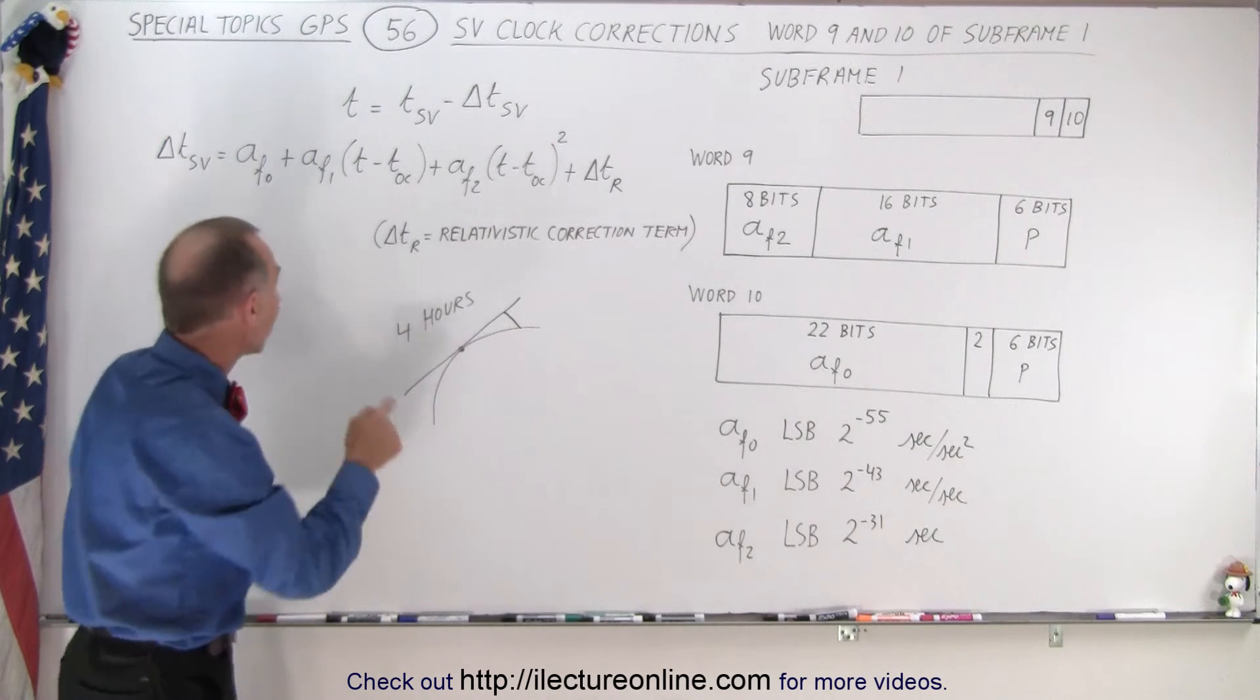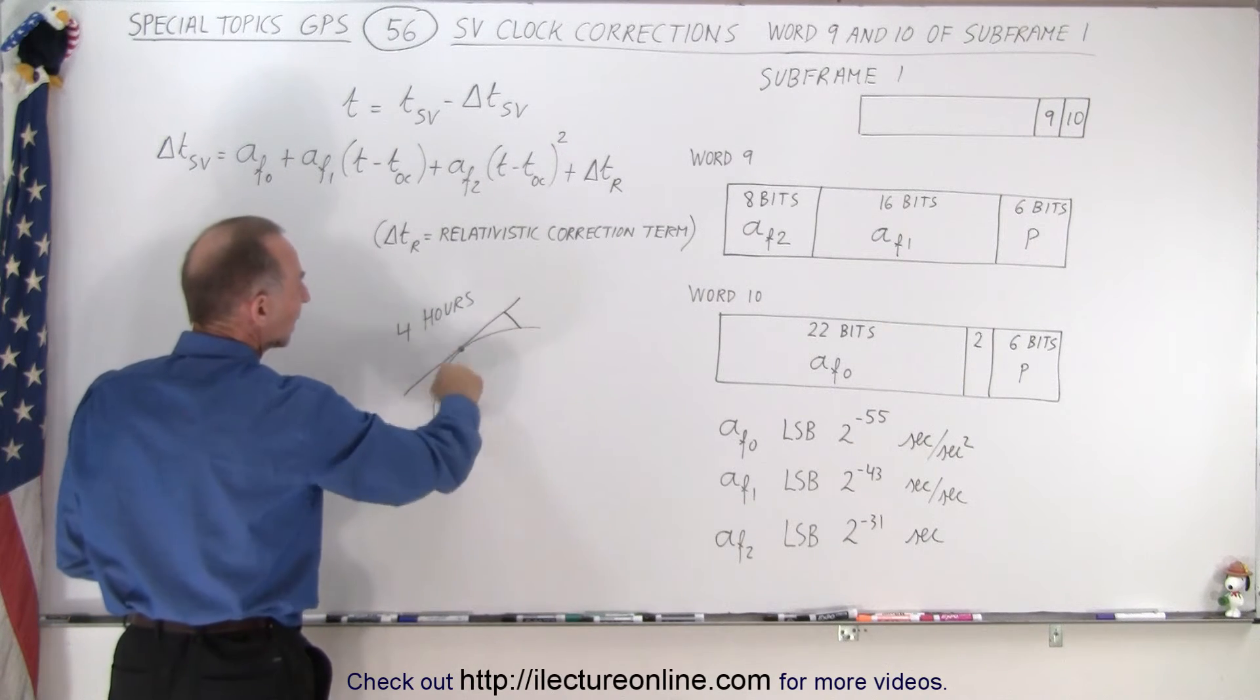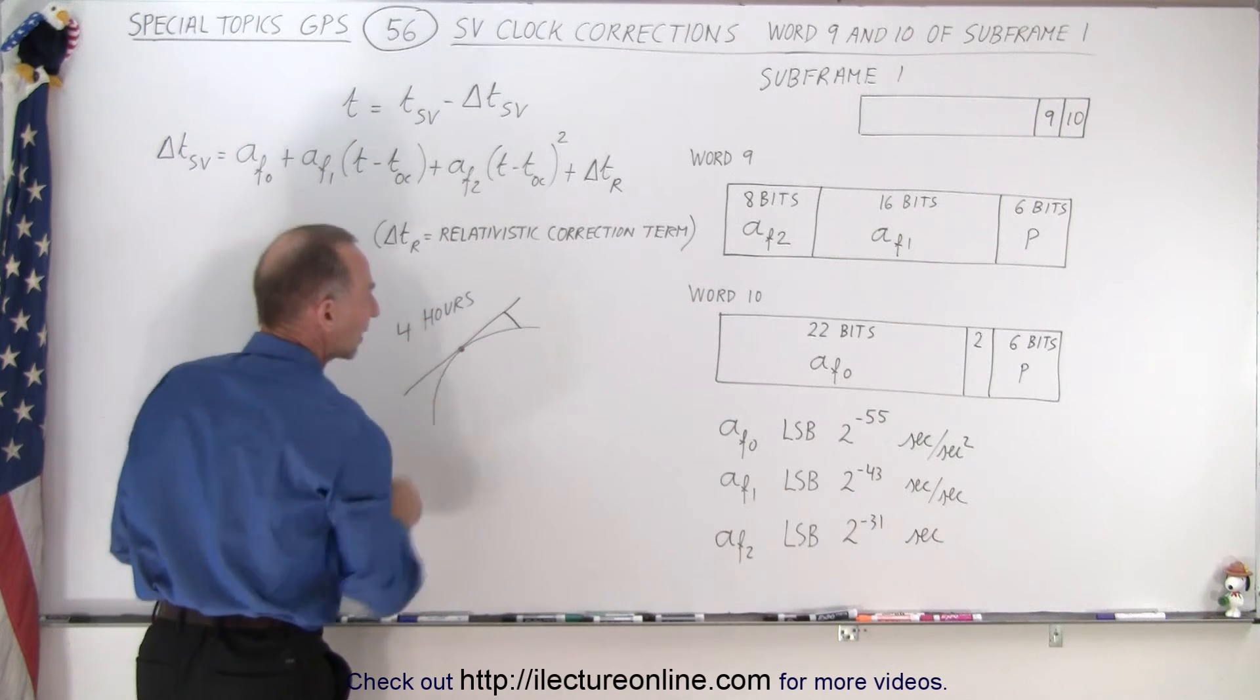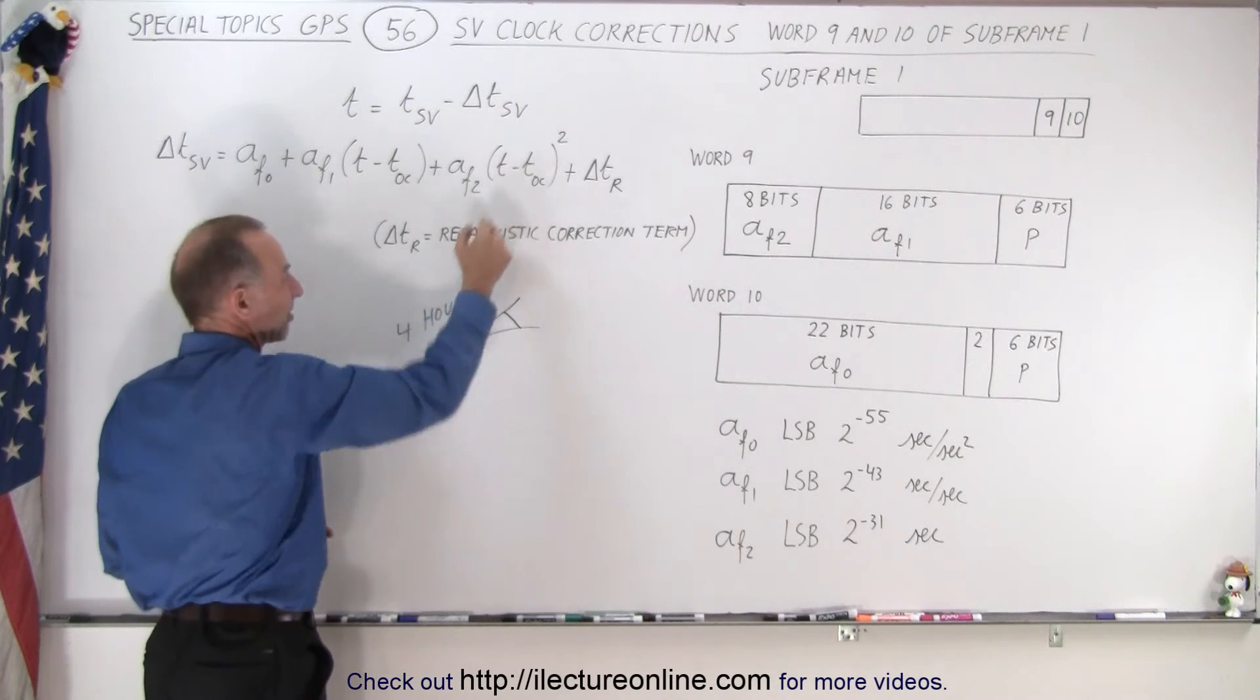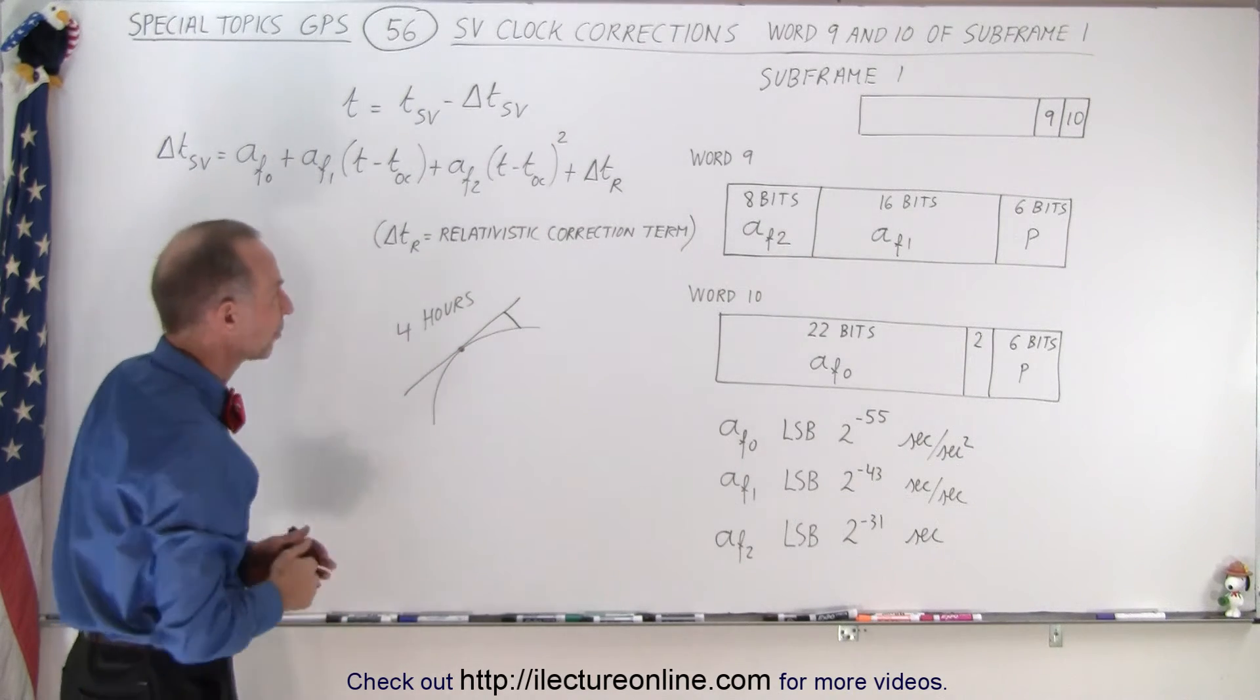So the time of clock will give us an indication where on this curve we're going to be, how far away we are from that perfect time. Notice the LSB of the TOC was 16 seconds so it wasn't that important over a 4 hour period if we're off by a few seconds.